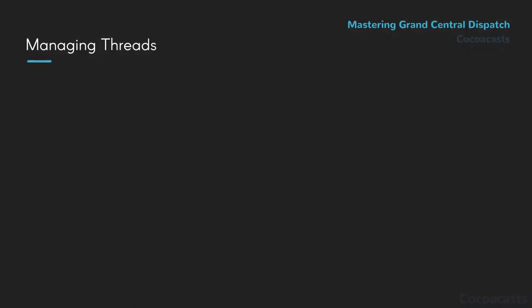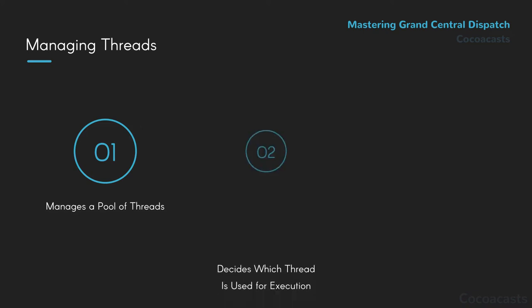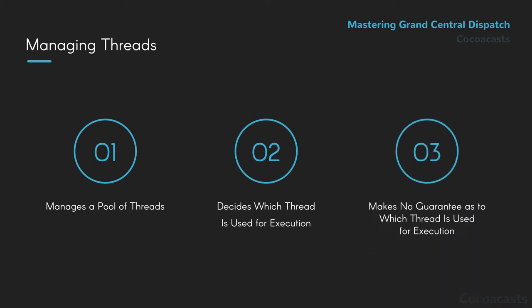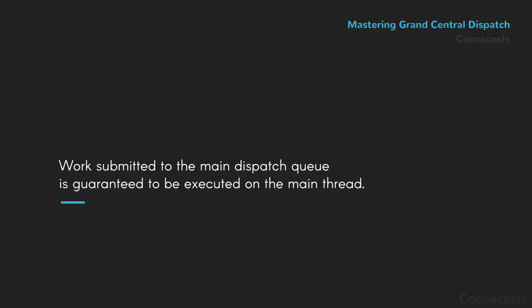Performing work in the background used to be tedious. Creating and managing threads can become complex very quickly. Grand Central Dispatch makes this much easier — it manages a pool or collection of threads and decides which thread is used to execute the block. That's an implementation detail the developer doesn't need to worry about. Grand Central Dispatch doesn't make a guarantee as to which thread is used to execute the block, with one exception: Grand Central Dispatch manages a dispatch queue tied to the main thread, and work submitted to the main dispatch queue is guaranteed to be executed on the main thread.